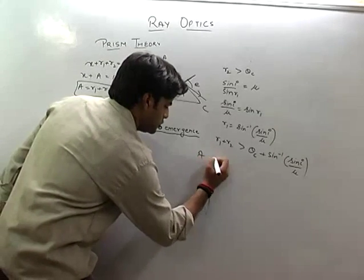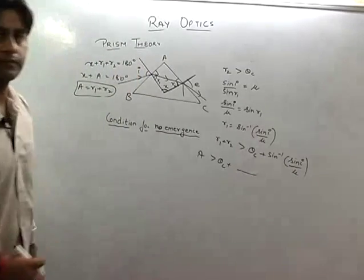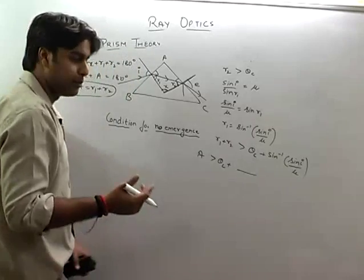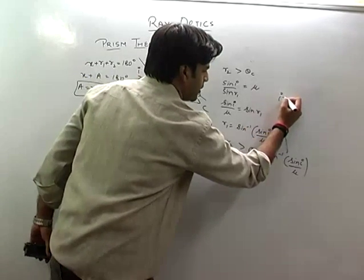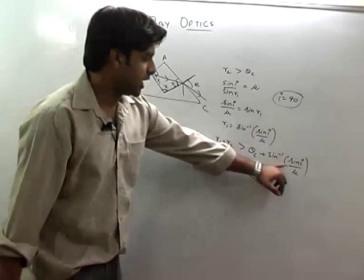That means a should be greater than theta c plus that term. Let us suppose that if I put i to 90. If I put i to 90, then what will happen? Sin 90 will be 1.